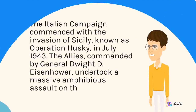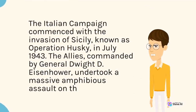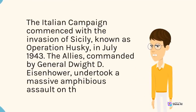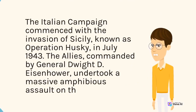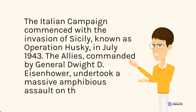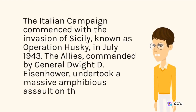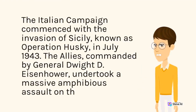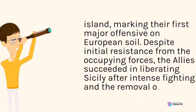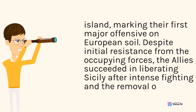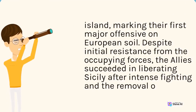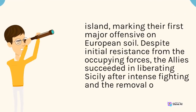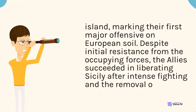The Italian Campaign commenced with the invasion of Sicily, known as Operation Husky, in July 1943. The Allies, commanded by General Dwight D. Eisenhower, undertook a massive amphibious assault on the island, marking their first major offensive on European soil. Despite initial resistance from the occupying forces, the Allies succeeded in liberating Sicily after intense fighting.